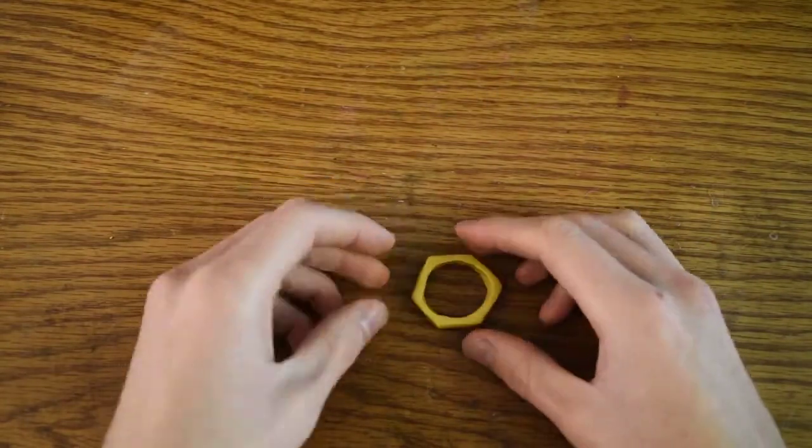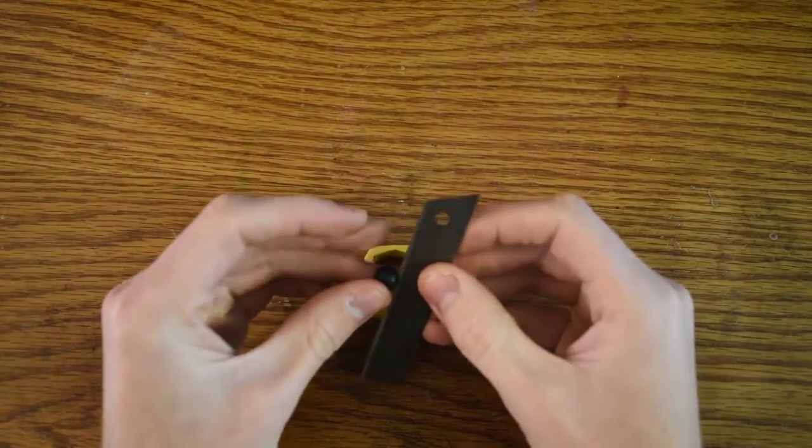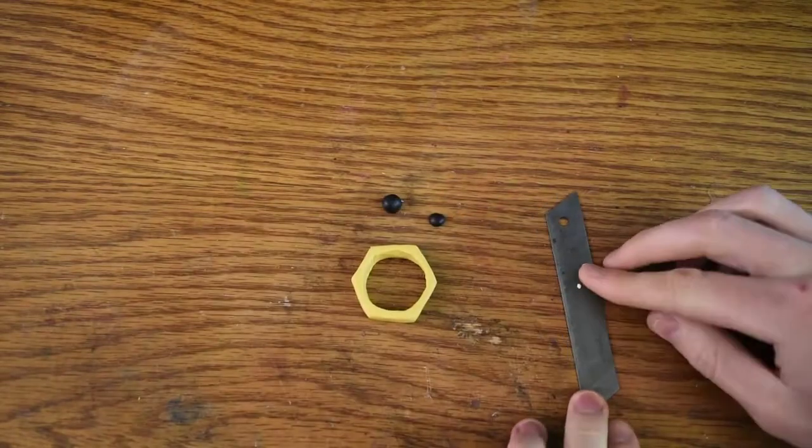Now we can move on to creating the eye, which is just a ball. We're going to use some liquid clay later to make it look like it's floating around, and hopefully that works out.